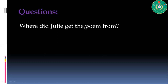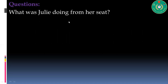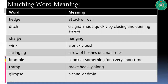The next question: where did Julie get the poem from? Julie got the poem by downloading it, and she took a printout. What is Julie doing from her seat? I'd like you to look for this answer yourself. Our next activity is matching word meanings. The words are: hedge, beach, charge, wink, stringing, bramble, tramp, and glimpse.